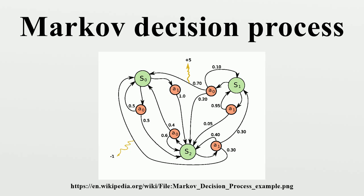Reinforcement learning: If the probabilities or rewards are unknown, the problem is one of reinforcement learning. For this purpose it is useful to define a further function Q, which corresponds to taking the action and then continuing optimally. While this function is also unknown, experience during learning is based on state-action pairs. Thus, one has an array Q and uses experience to update it directly. This is known as Q-learning.